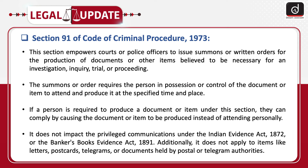Let's now discuss Section 91 of the Code of Criminal Procedure 1973. This section empowers courts or police officers to issue summons or written orders for the production of documents or other items believed to be necessary for an investigation, inquiry, trial, or proceeding. The summons or order requires the person in possession or control of the document or item to attend and produce it at the specified time and place. If a person is required to produce a document under this section, they can comply by causing the document to be produced instead of attending personally. It does not impact privileged communications under the Indian Evidence Act 1872 or the Banker's Books Evidence Act 1891.